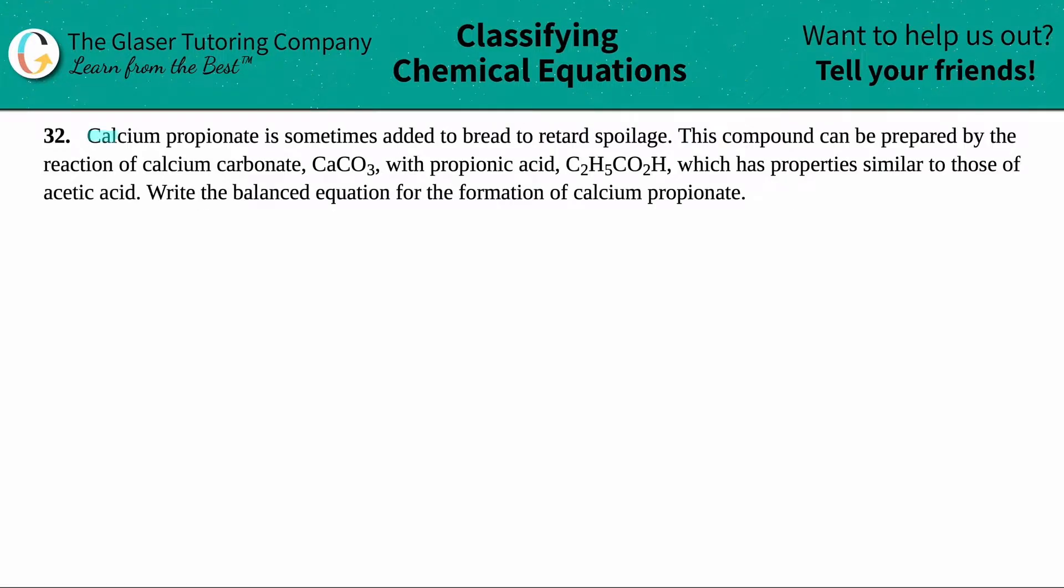Number 32. Calcium propionate is sometimes added to bread to retard spoilage, which means it slows down the spoiling rate. This compound can be prepared by the reaction of calcium carbonate, CaCO3, with propionic acid, C2H5CO2H, which has properties similar to those of acetic acid. Write the balanced equation for the formation of calcium propionate.